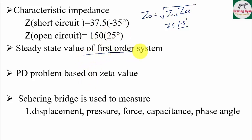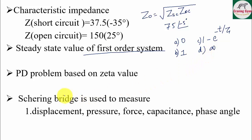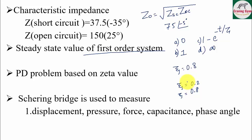They asked about the steady state value of a first order system with options 0, 1, (1 - e^(-t/τ)), and none of the above. A proportional derivative (PD) control question was based on Zeta value. Initially Zeta was 0.2, and after adding derivative control, Zeta increases to 0.8. When using PD control, stability increases, meaning peak overshoot (Mp) reduces.